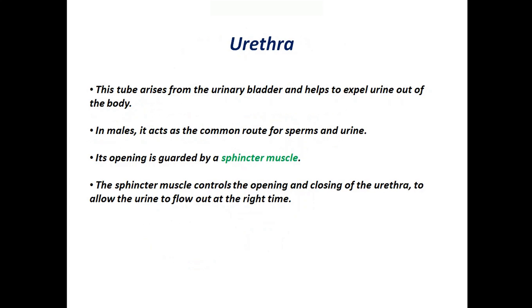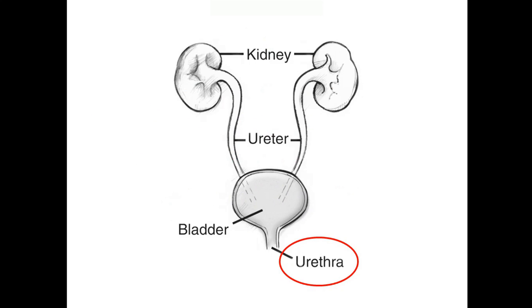The last part of the excretory system is the urethra. This tube arises from the urinary bladder and helps to expel urine out of the body. In males, it acts as the common route for sperms and urine. Its opening is guarded by a sphincter muscle. The sphincter muscle controls the opening and closing of the urethra to allow urine to flow out at the right time. The red circle indicates the urethra.